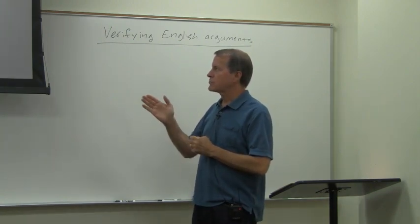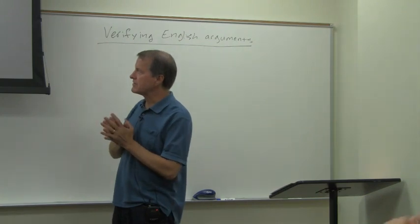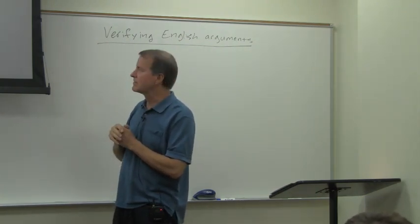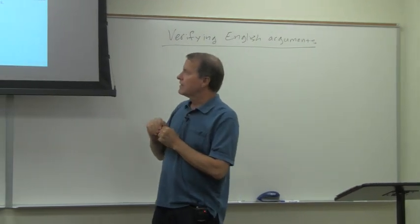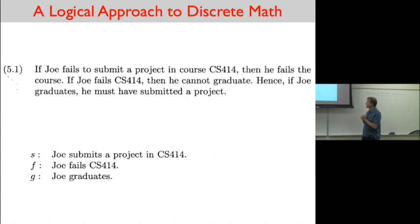We're going to go through a bunch of case studies in this chapter. Here's the first one on the slide - it's 5.1 in the book. Here is a logical argument: If Joe fails to submit a project in course CS 414, then he fails the course. Second statement: if Joe fails CS 414, then he cannot graduate. Hence, if Joe graduates, he must have submitted a project.